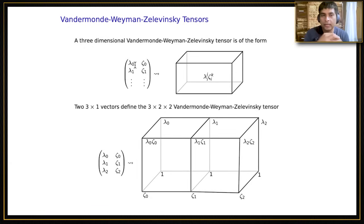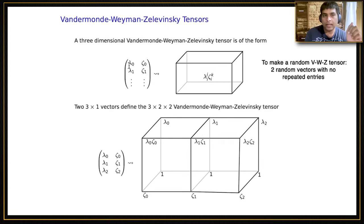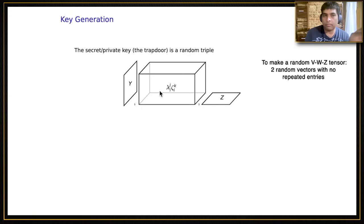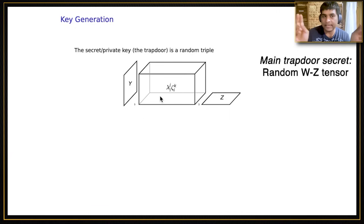We will construct random Weyman-Zelevinsky tensors. How do you do that? You just construct two random vectors, and I'm going to demand that none of their entries are repeated, but don't worry about that. Once you choose two random vectors, you get a random Weyman-Zelevinsky tensor. This random Weyman-Zelevinsky tensor is the most important ingredient of the secret private key.